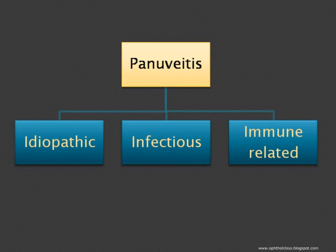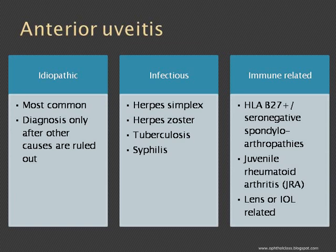Now, one by one, let us see the common causes. First, anterior uveitis. Anterior uveitis is the most common type of uveitis encountered in clinical practice. Idiopathic is the most common variety, but remember the diagnosis of idiopathic is only made after all other causes are ruled out. For infectious causes, two common viruses cause anterior uveitis: herpes simplex and herpes zoster. To this we add two more causes: tuberculosis and syphilis. These are common to almost all types of uveitis.